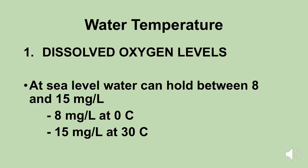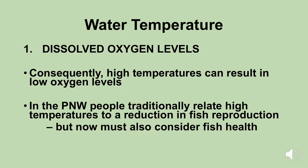Looking at dissolved oxygen levels in more detail: at sea level, water can hold between 8 and 15 milligrams of dissolved oxygen per liter. This ranges from 15 milligrams per liter at 0 degrees centigrade down to 8 milligrams per liter at 30 degrees centigrade. Consequently, under high temperatures we get lower oxygen levels, which makes it hard for aquatic organisms to obtain sufficient oxygen.